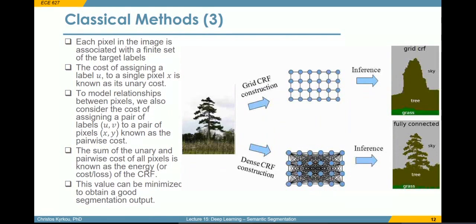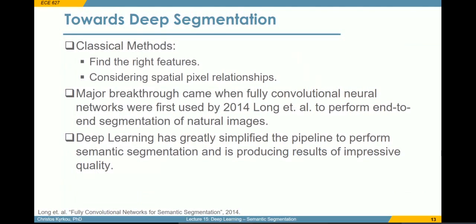These classical methods were more widely used before deep learning methods were introduced. They required careful selection of features and spatial relationships between pixels. A major breakthrough came around 2014 with one of the first works to use a convolutional neural network for semantic segmentation. Since then, people have started to use deep learning for semantic segmentation, as it has somewhat simplified the process — we essentially just need to collect some data and train a model.